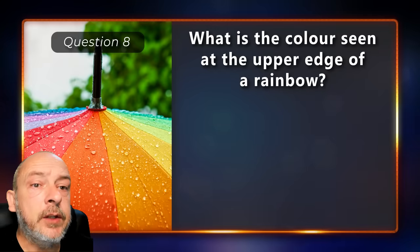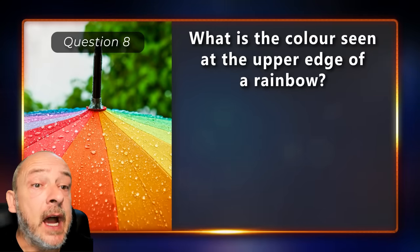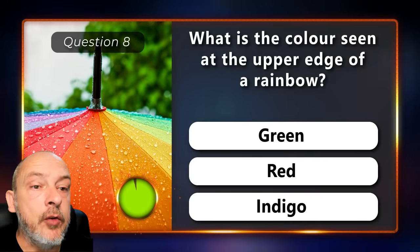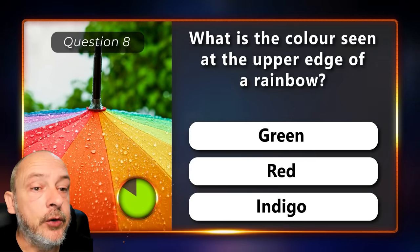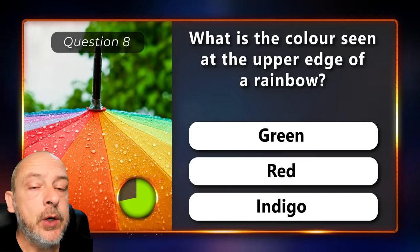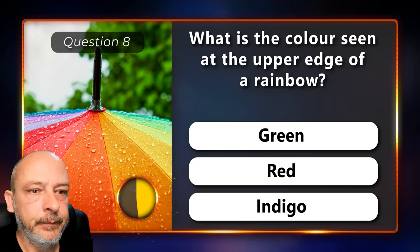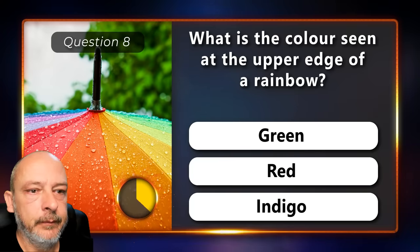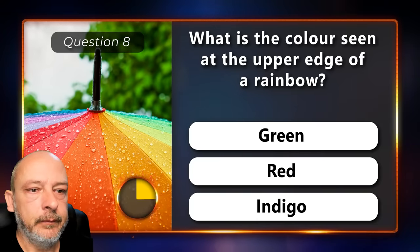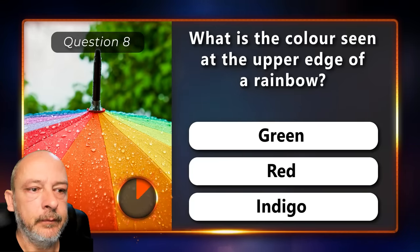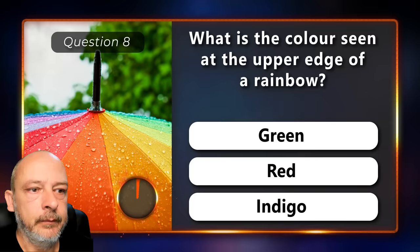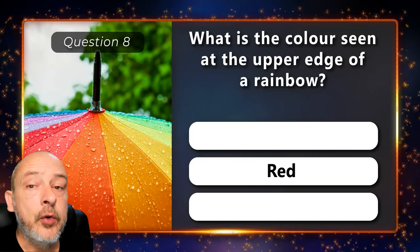Which is the color seen at the upper edge of a rainbow — is it green, red, or indigo? Red.